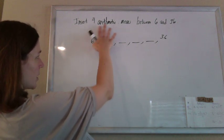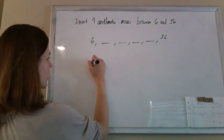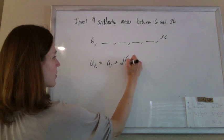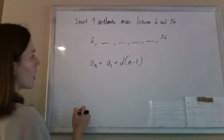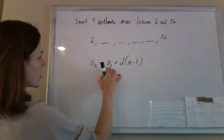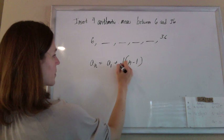So we're doing an arithmetic sequence, and there's no sum involved, so we're using the formula where the nth term equals the first term plus the common difference times n minus 1. I know my first term; what I'm missing is the common difference d.